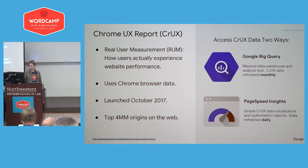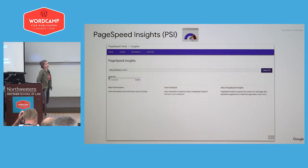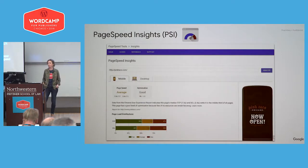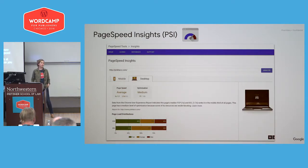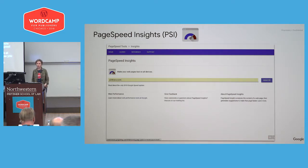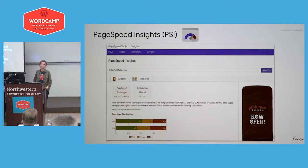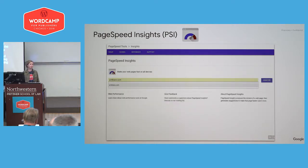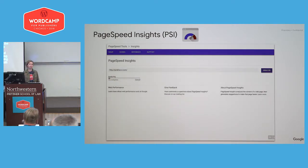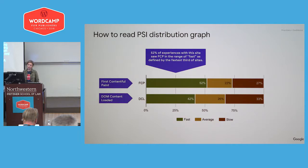The Chrome User Experience Report, or CrUX, is accessible in two ways: Google BigQuery, which is a massive data warehouse, and PageSpeed Insights, which is a very simple, user-friendly data visualization. If you just Google for PageSpeed Insights, you'll end up at a form where you enter any site URL. Provided that it's in the CrUX dataset, it will give you a result showing the familiar green, yellow, red graph of how that site performs on both mobile and desktop.